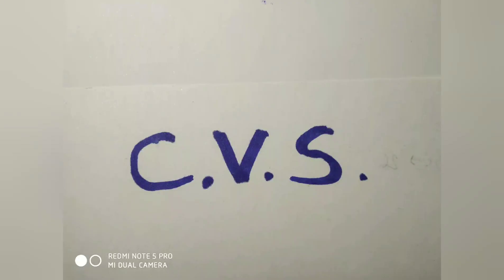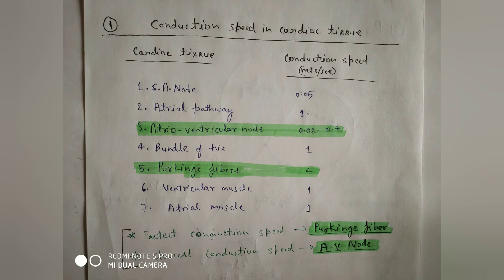Based on the cardiovascular system, I will first discuss conduction speed in cardiac tissue, then the property of automaticity. For conduction speed, we have seven types of tissue: SA node, atrial pathway, AV node, bundle of His, Purkinje fibers, ventricular muscle, and atrial muscle. The fastest conduction speed is in the Purkinje fibers at 4 meters per second.